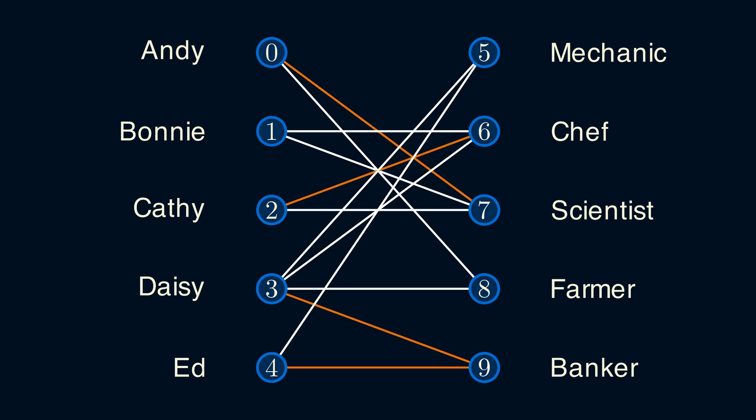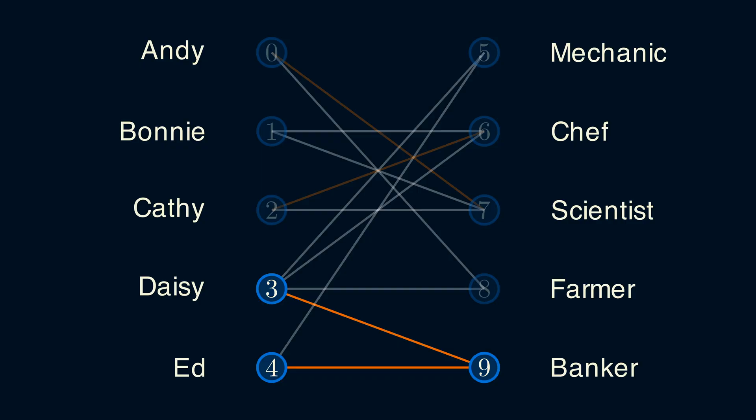This is because both Daisy and Ed are bankers. In math terms, we don't want a vertex to belong to multiple edges in a matching.